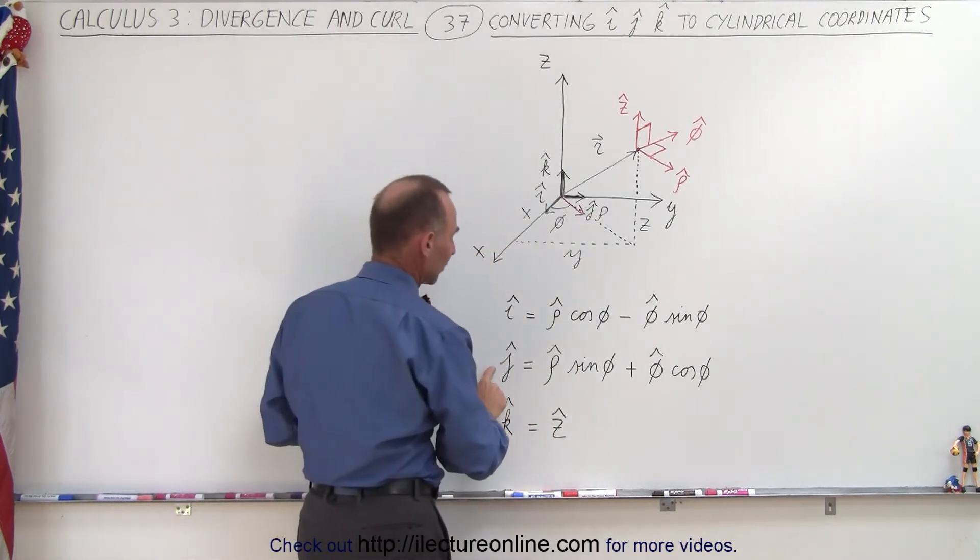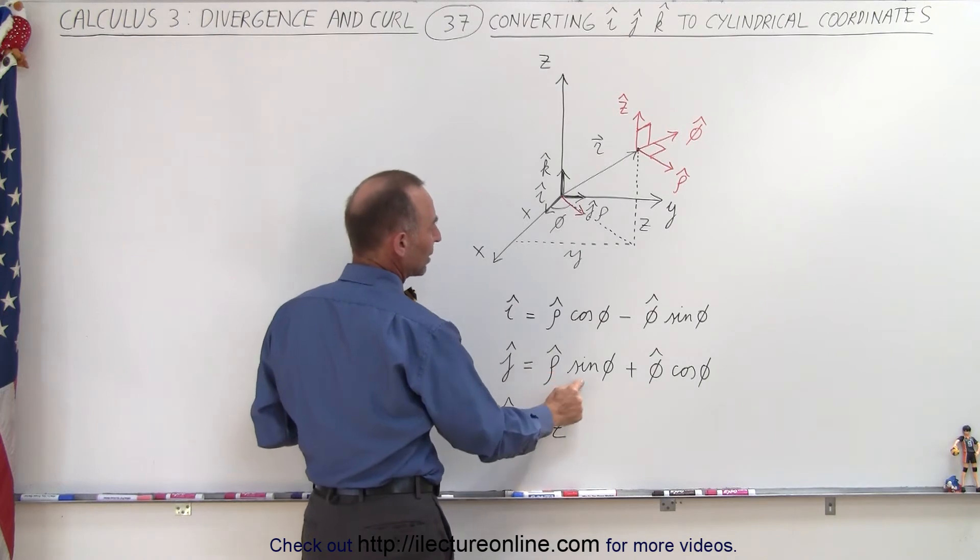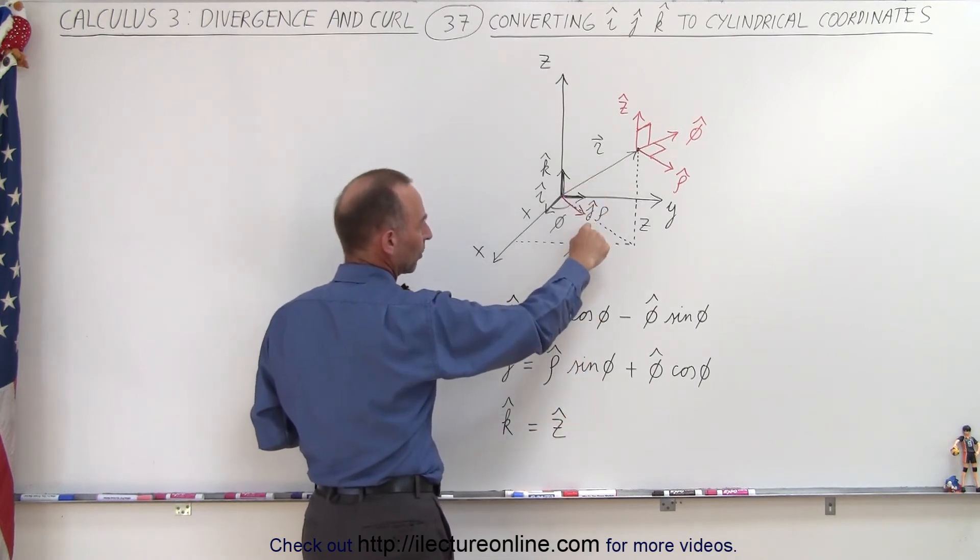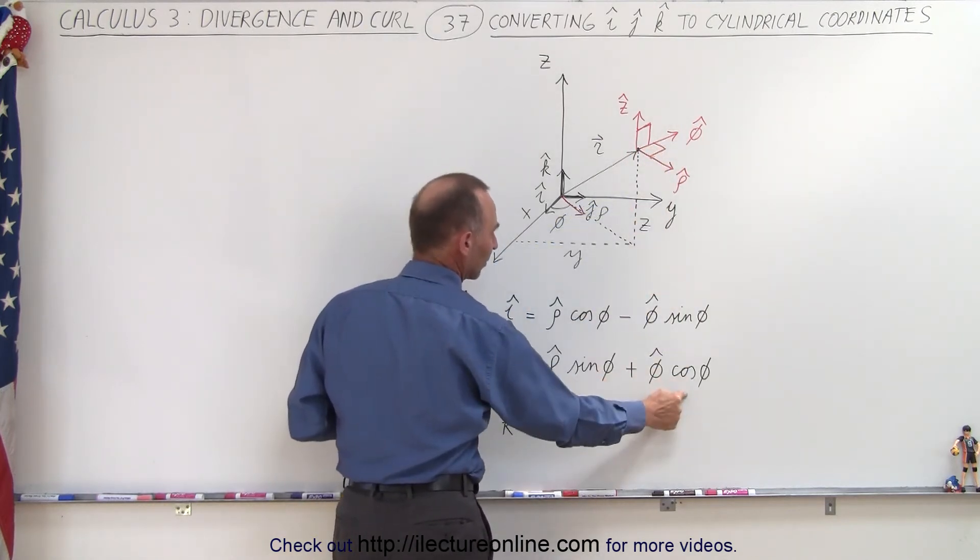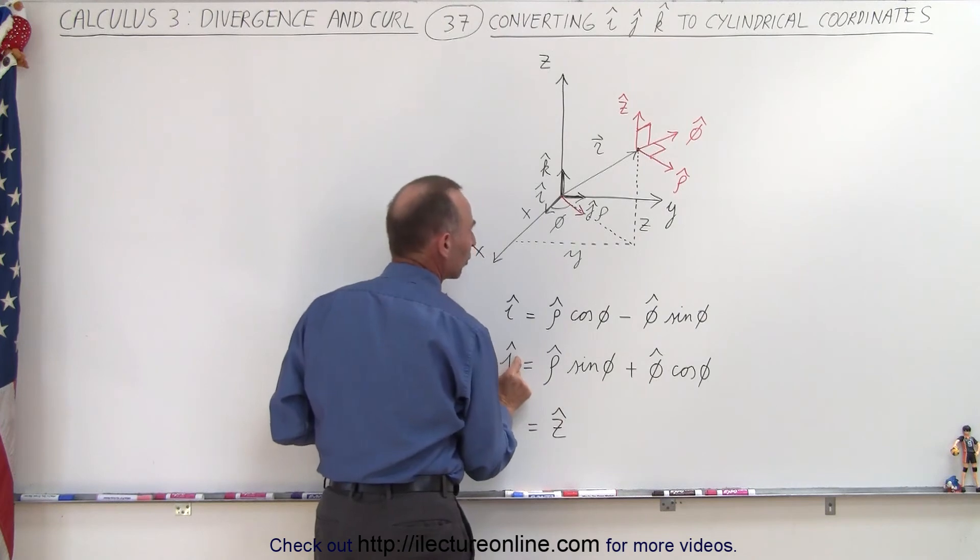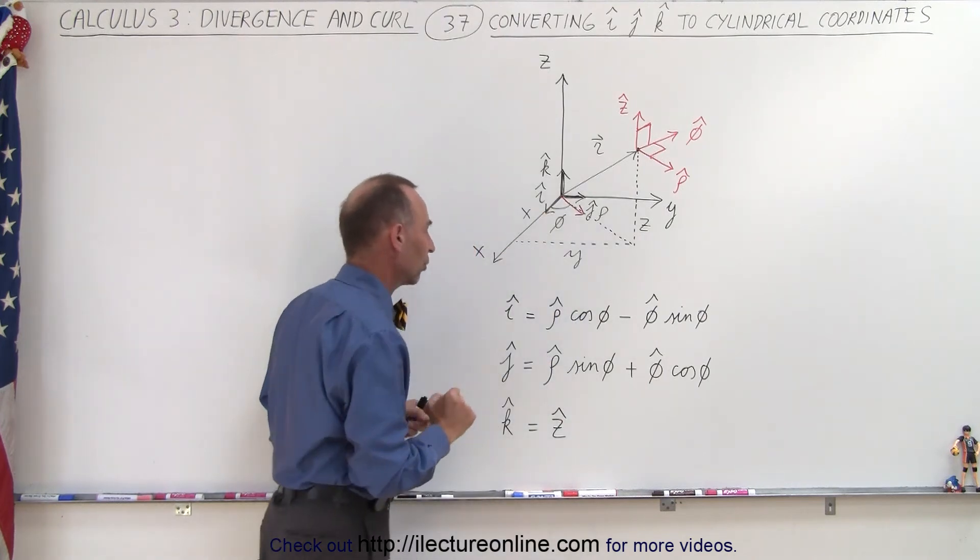Now to find the unit vector in the j direction, notice now we need the sine component of the row unit vector right here, and we're going to need the cosine component of the phi vector. So we add those two together, that will add up to the j component or the y component in Cartesian coordinates.